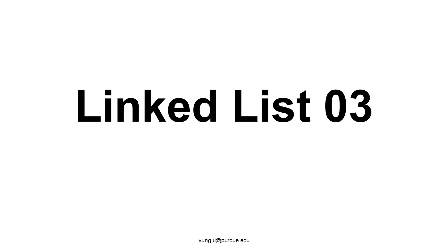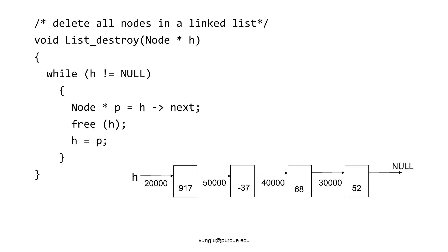This is the third lecture about linked lists. In this lecture, we focus on the destroy function. The function deletes every node in a linked list. This is a way to implement the destroy function.